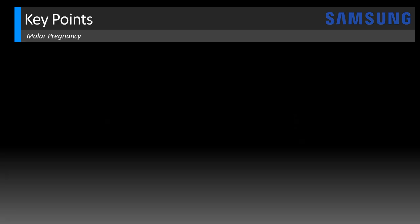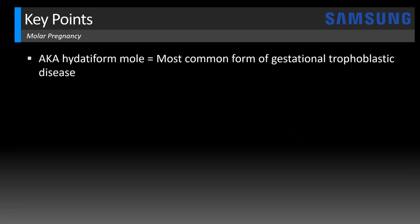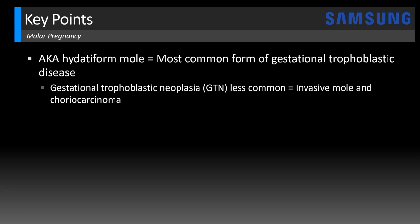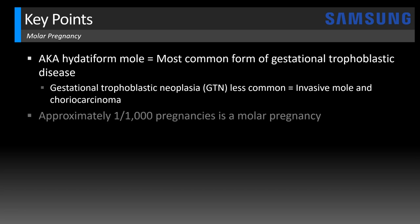Let's review some key points for molar pregnancy — you can also find these in the episode show notes. These are also known as hydatidiform moles, which are the most common form of gestational trophoblastic disease. The less common form is gestational trophoblastic neoplasia, or GTN, which is composed of invasive moles and choriocarcinoma. Molar pregnancies are fairly common — approximately one out of every 1,000 pregnancies is a molar pregnancy.